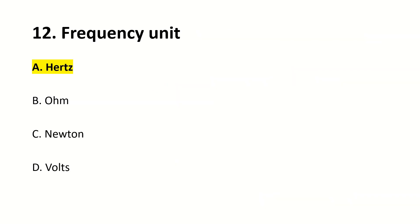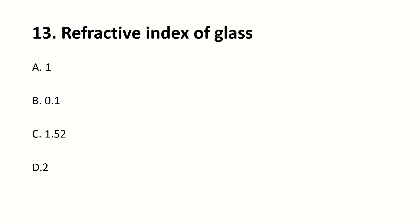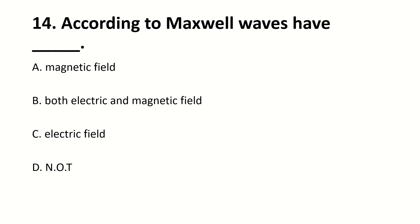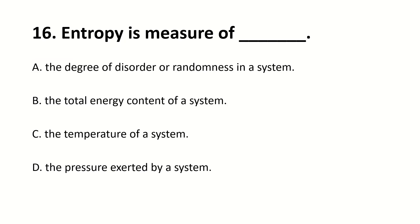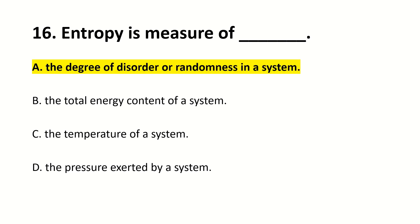Frequency unit — right answer is A, hertz. The refractive index of glass — right answer is C, 1.52. According to Maxwell, waves have — right answer is B, both electric and magnetic field. The electromagnetic waves move with the speed of — right answer is A, light.